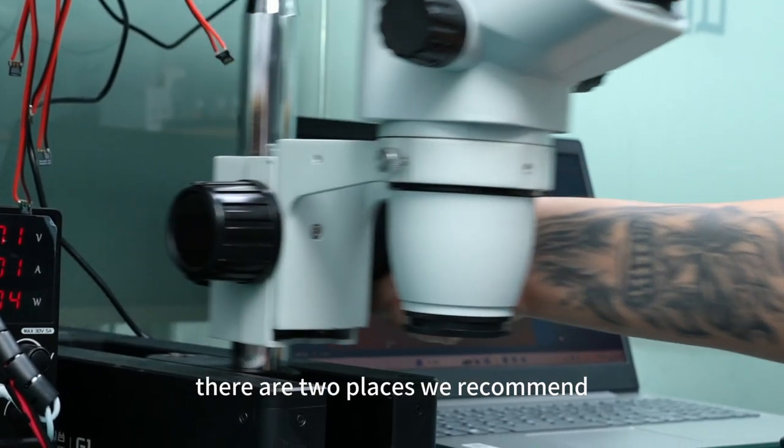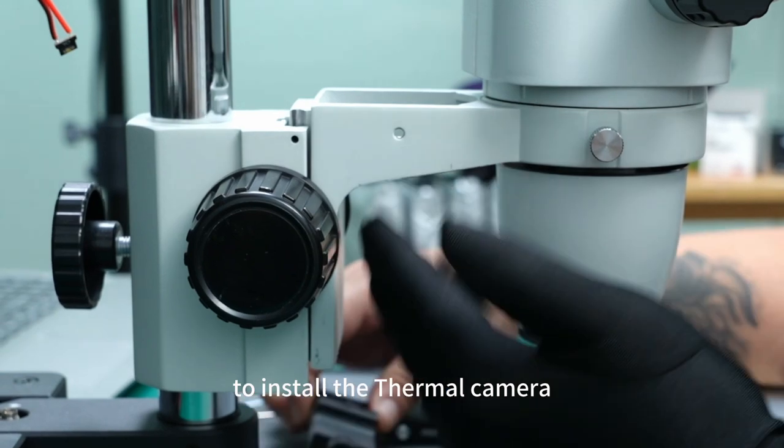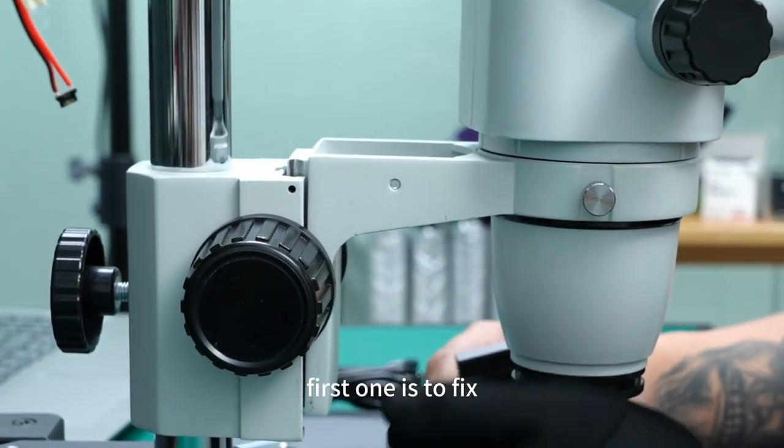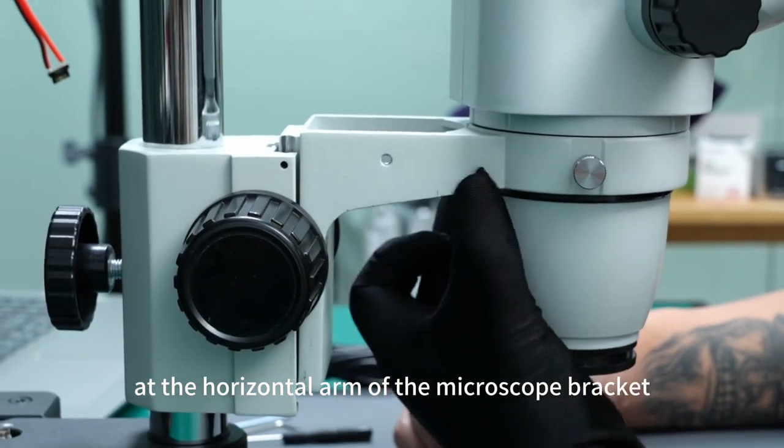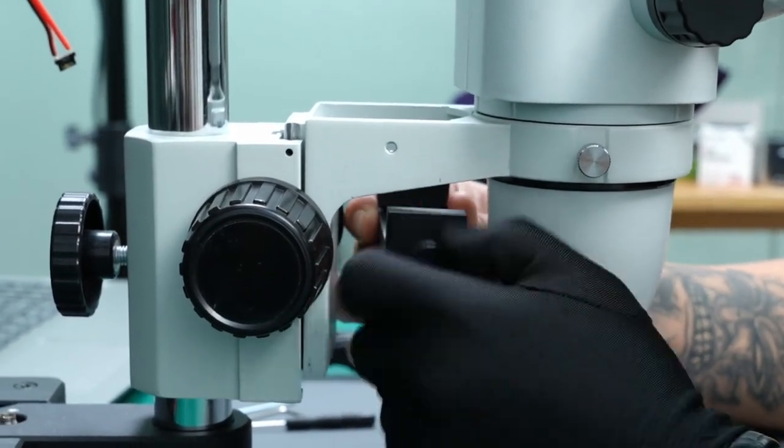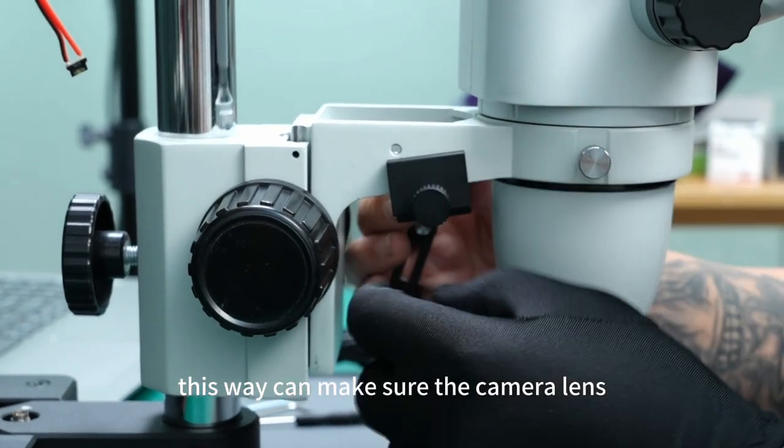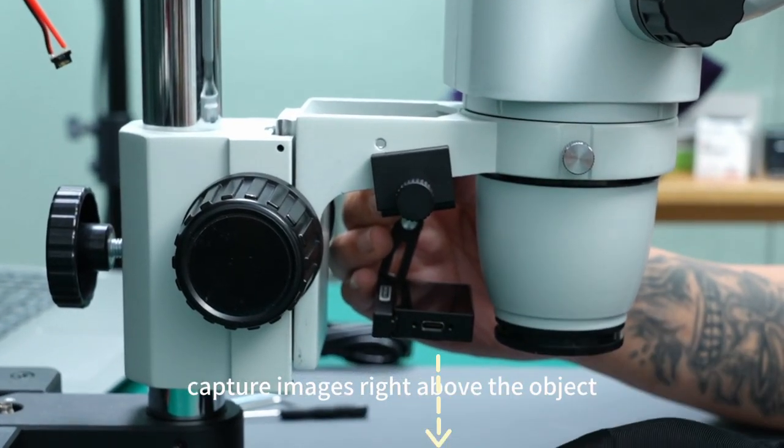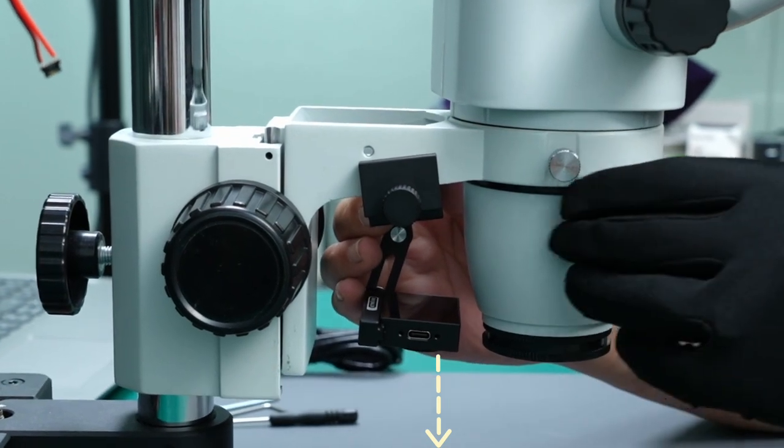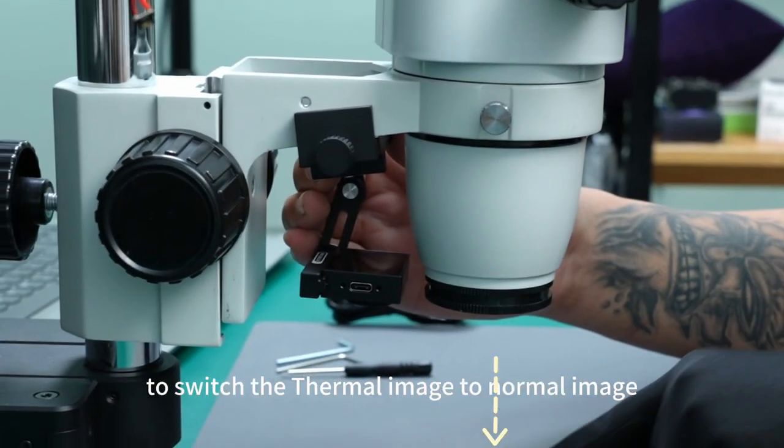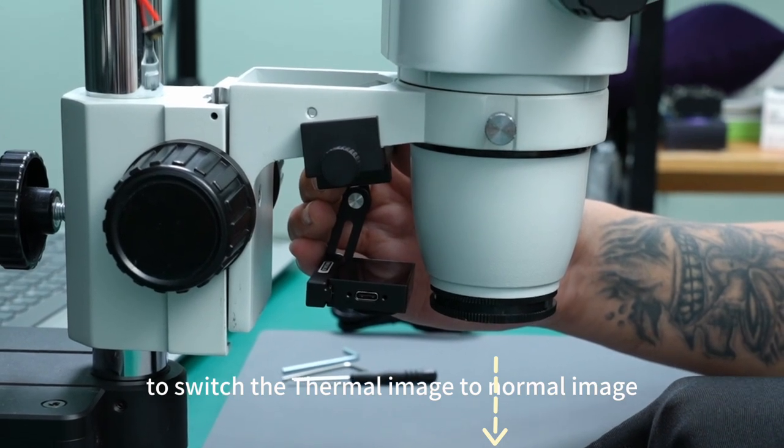There are two places we recommend to install the thermal camera. The first one is to fix at the horizontal arm of the microscope bracket. This way ensures the camera lens captures images right above the object. You only need to move the microscope slightly to switch the thermal image to normal image.